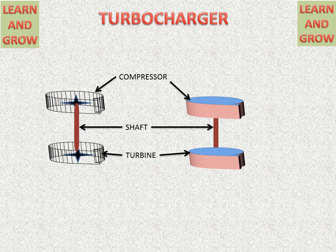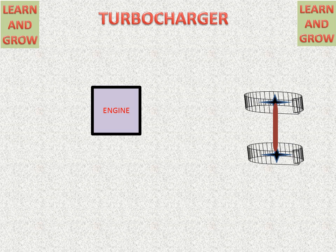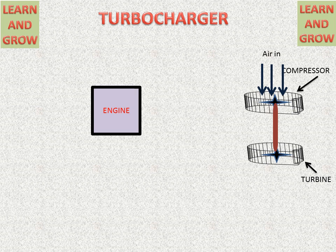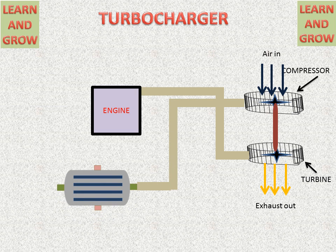We see the working of a turbocharger connected with the engine and intercooler. We have an engine from which exhaust gases will be liberated. We have a turbocharger which is used for turbocharging the engine. Air will enter from the compressor section and exhaust will exit from the turbine section. The engine is connected to the turbine, and the compressor is connected to the intercooler and with the intake of the engine.